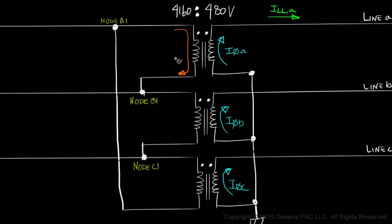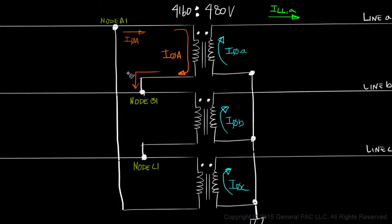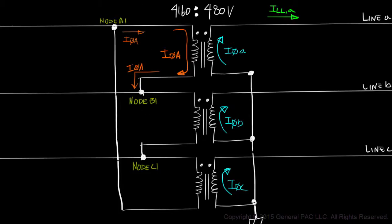We know from Part 3 that Primary Phase A Currents flow into the polarity side of winding A and out of the non-polarity side of winding A. Which means the current that flows out of Node A1, by definition, is Phase A Current. And since the non-polarity side of winding A is connected to the polarity side of winding B, the current that goes into Node B1 is the same Phase A Current.